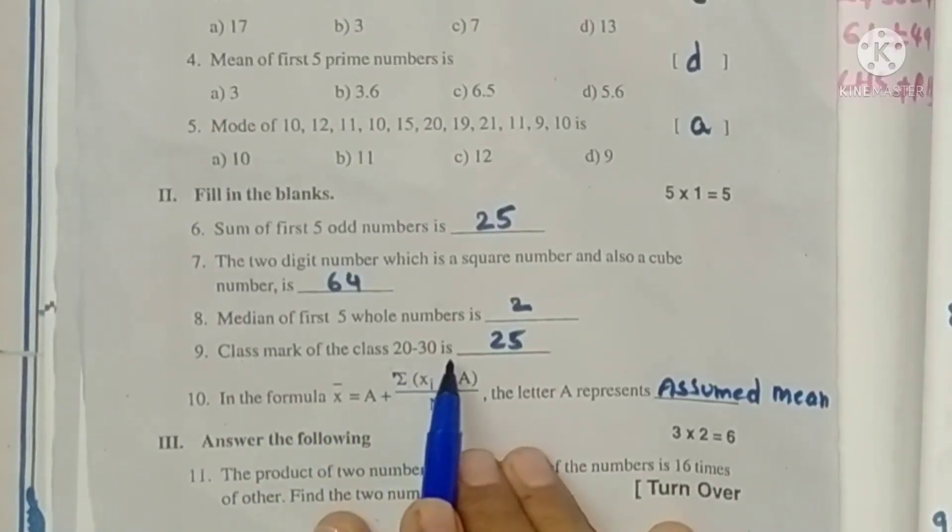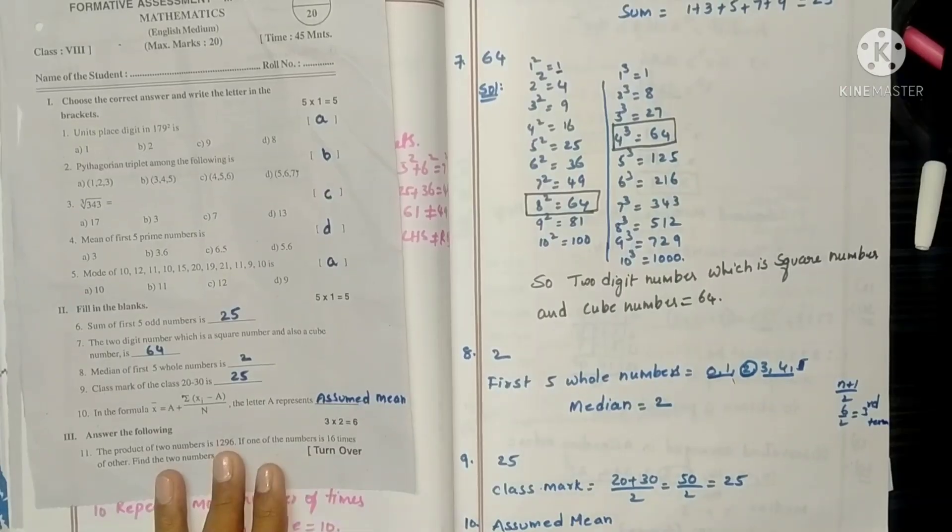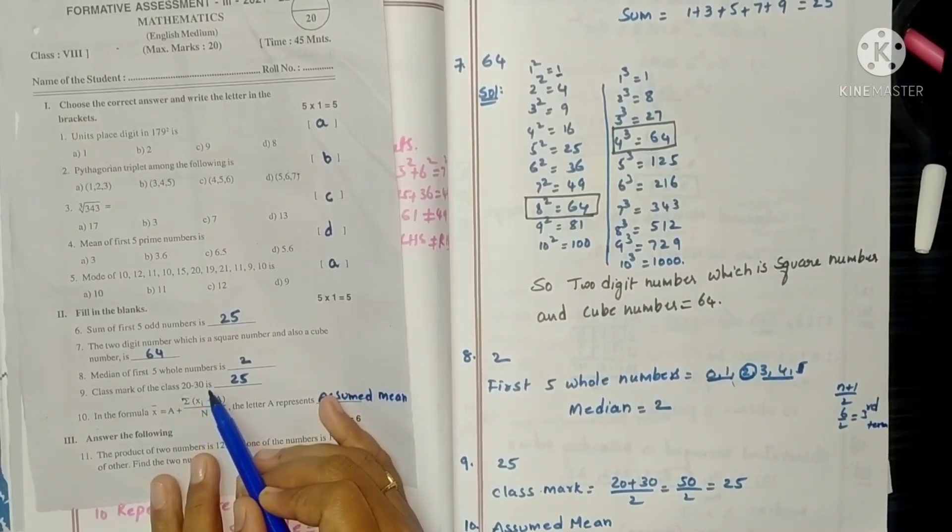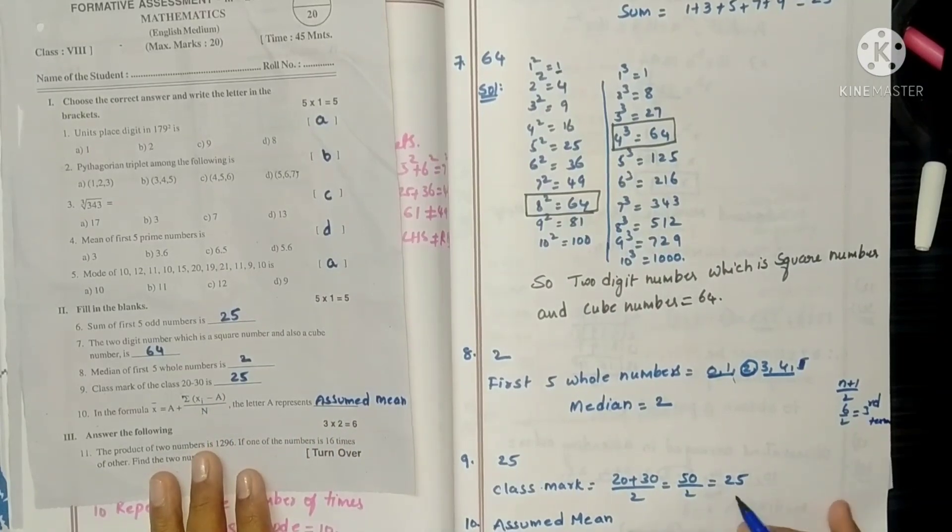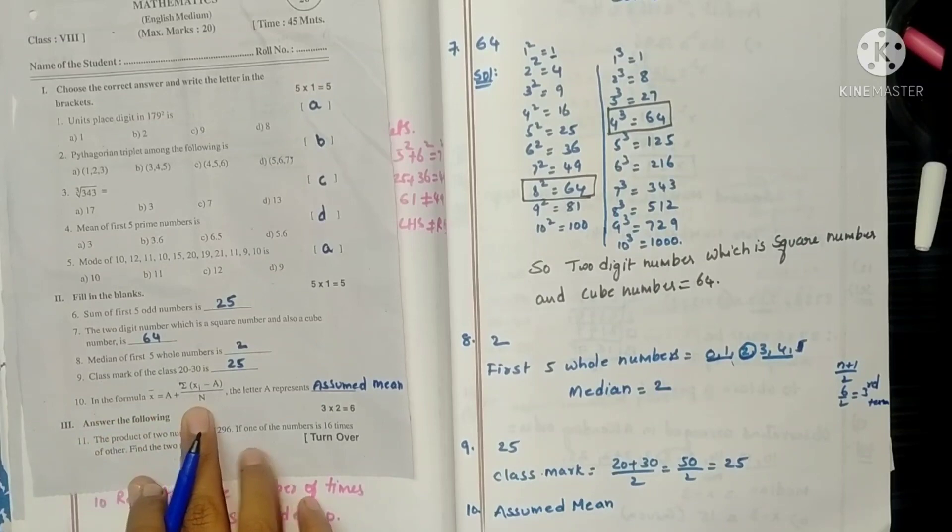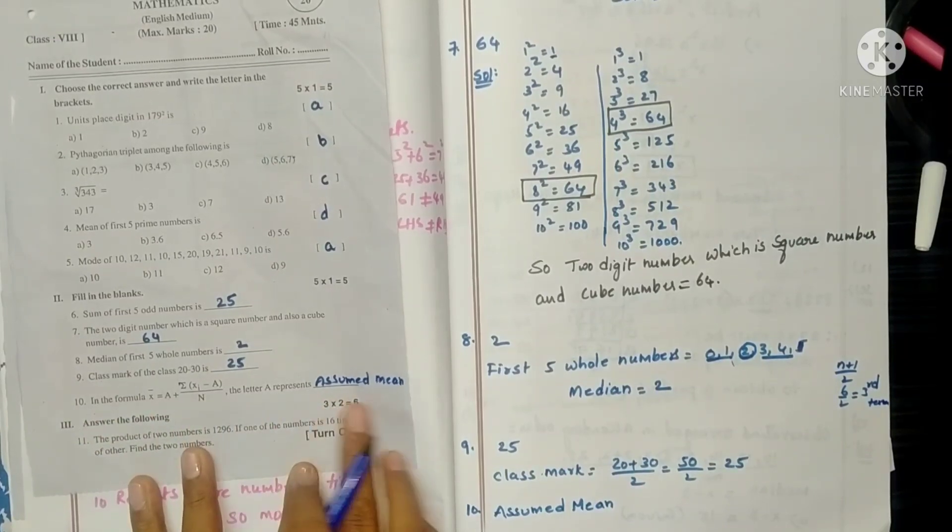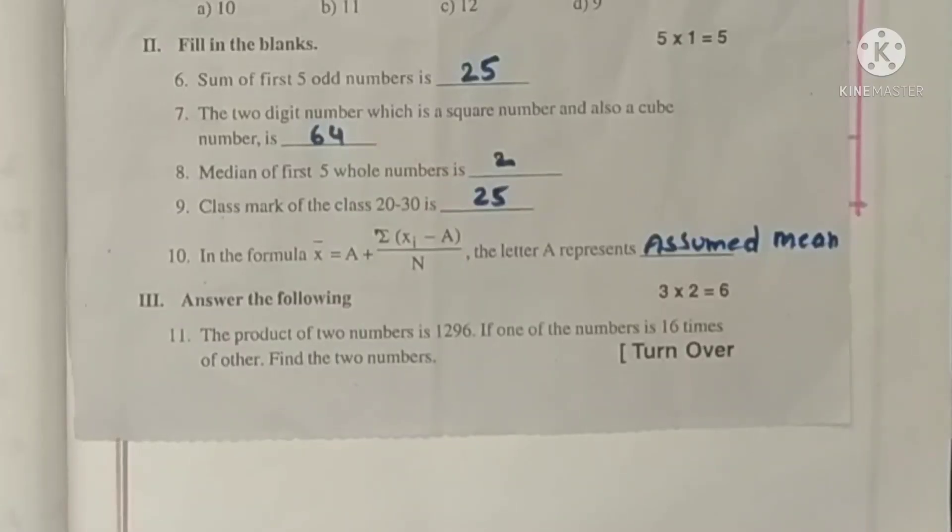Next, class mark of the class 20 to 30. Class mark is upper boundary plus lower boundary, or upper limit plus lower limit by 2. So it is 25. In this formula A represents assumed mean.